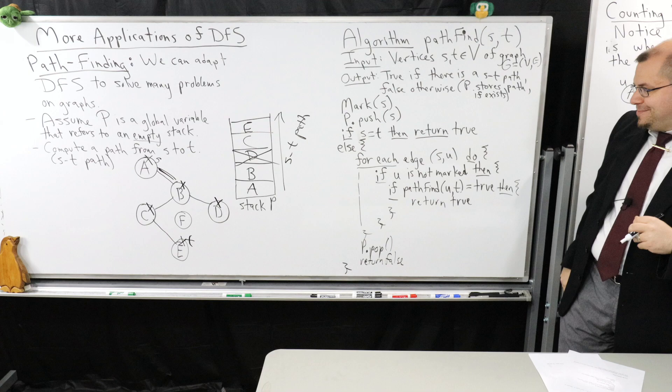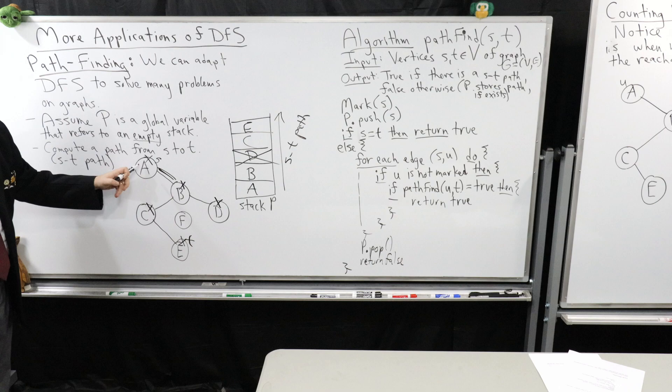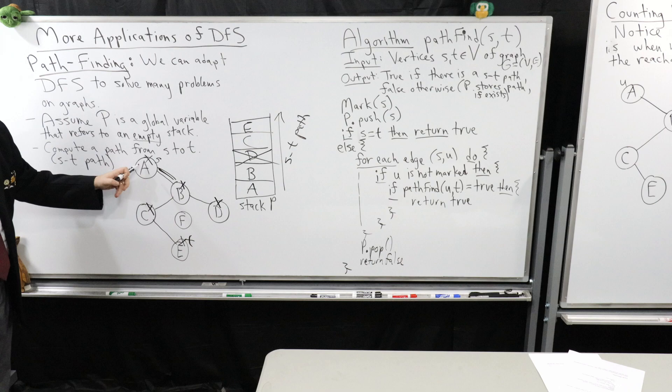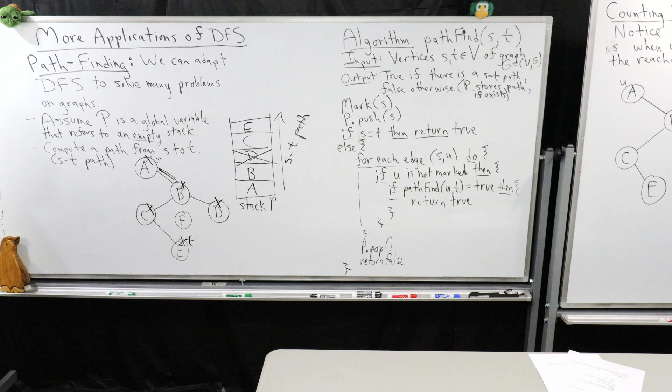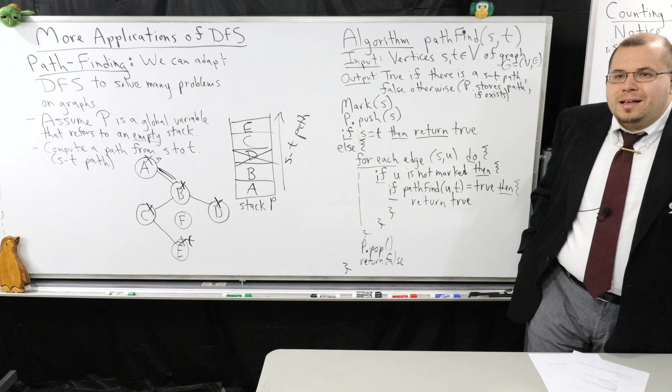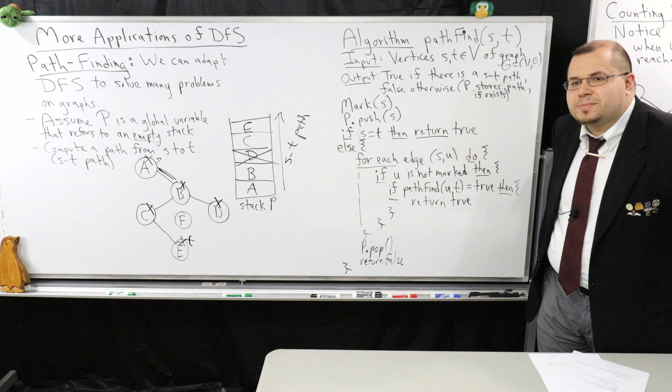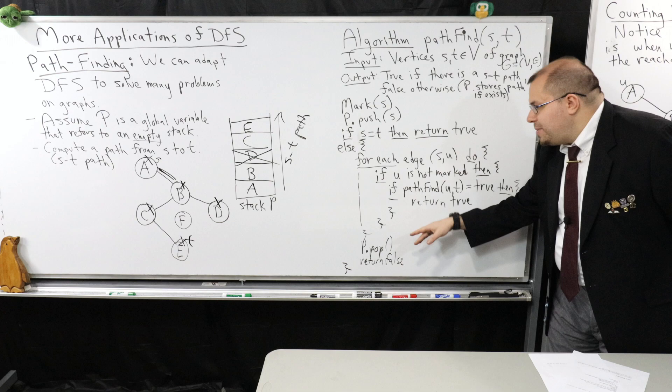Are there any questions about this pathfinding algorithm? I encourage you to try to find a path from A to F — we can see there is no path there, but think about what the stack should look like at the end of this process. Would the pop and return false be inside the loop? We need it to be outside the loop because we have to consider all of our incident edges first before we can say we didn't find any path.